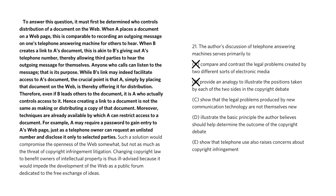C talks about how the legal problems created by new technology are not necessarily themselves new. This is not why the author mentioned the answering machines — his or her point wasn't that these are issues that have existed throughout time. Rather, the author is using this analogy to try to give us clarity on what the correct side is on this issue. So we can cut C as well. D says the answering machines serve to illustrate the principle which the author believes should determine the outcome of the copyright debate. This is pretty much the type of answer we expected, so let's leave D for now.